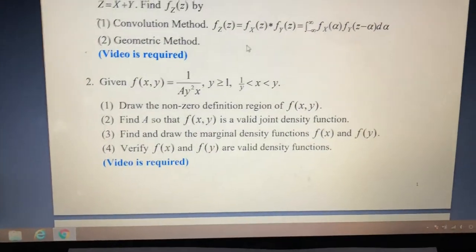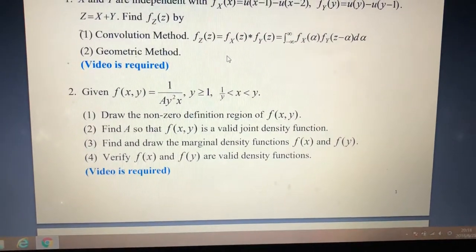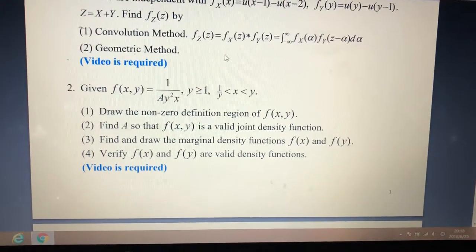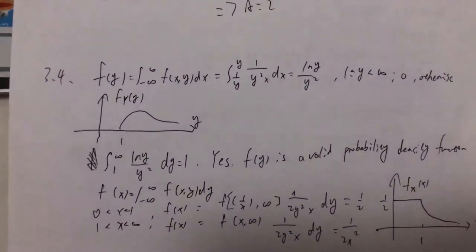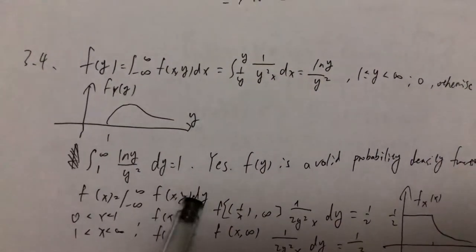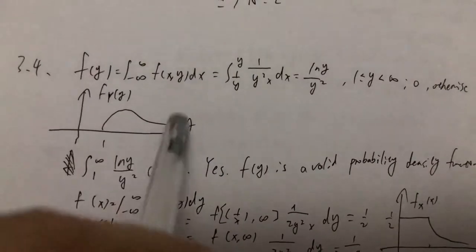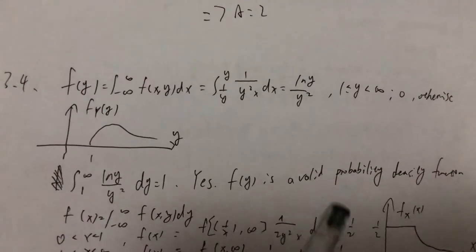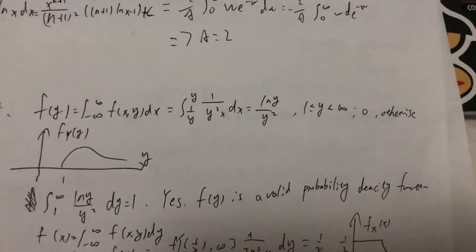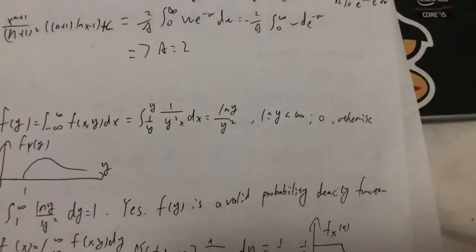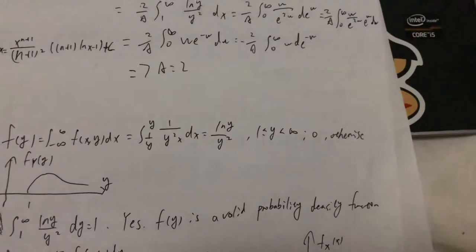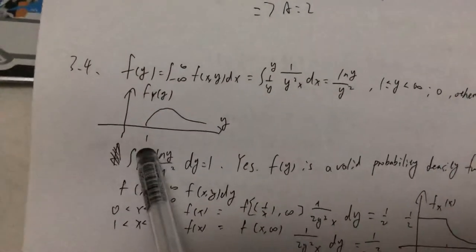For the last two questions, we need to find and draw the marginal density functions fx and fy, then verify that fx and fy are valid density functions. To start, we have fy equal to the integral of f(x,y) dx, integrating from 1 over y to y. That gives 1 over y squared x integrated over that range, which results in 1 over y, for y between 1 and infinity, and 0 otherwise. We have a graph here.